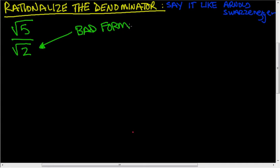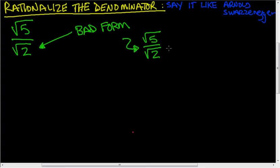So what we're going to do is, whenever we have a fraction that has a radical in the denominator, we're going to get rid of it. With this example — the square root of 5 over the square root of 2 — we're going to multiply by something so that there's no square root on the bottom.